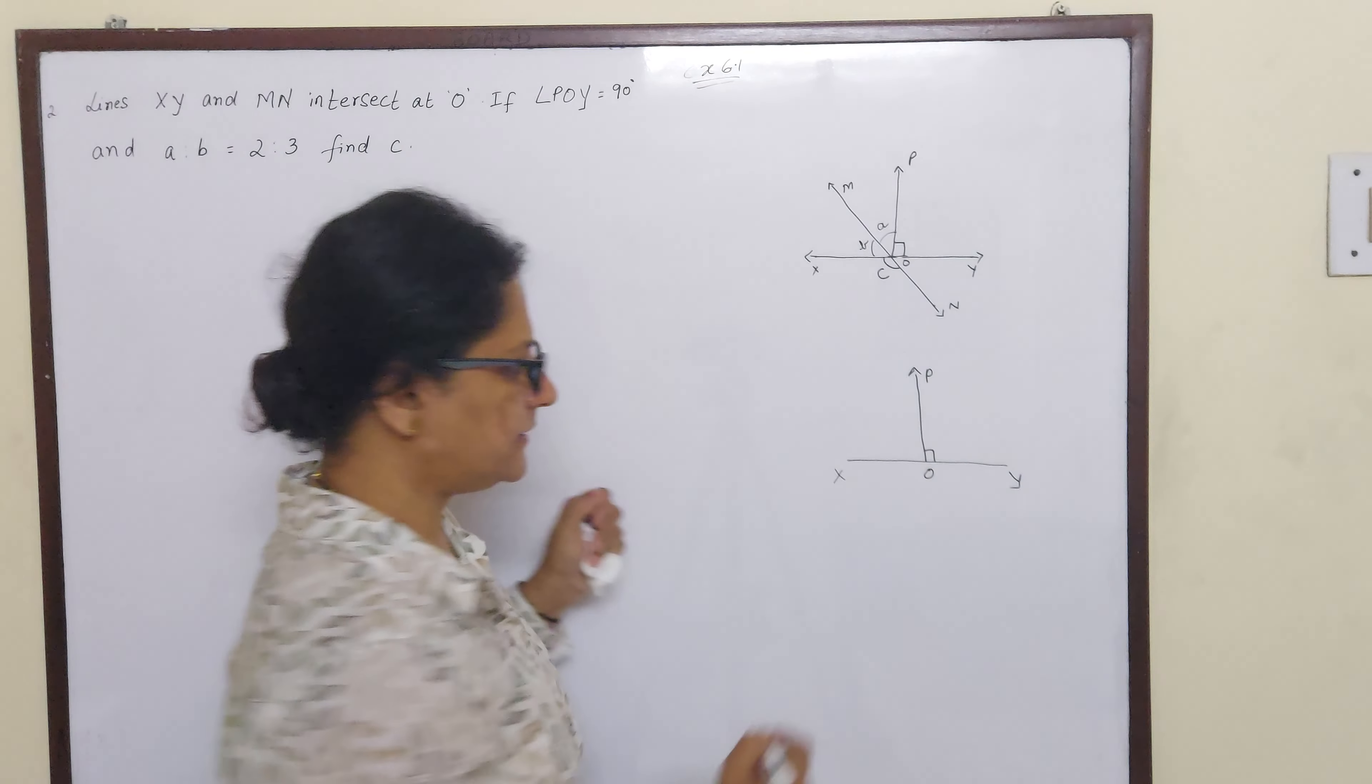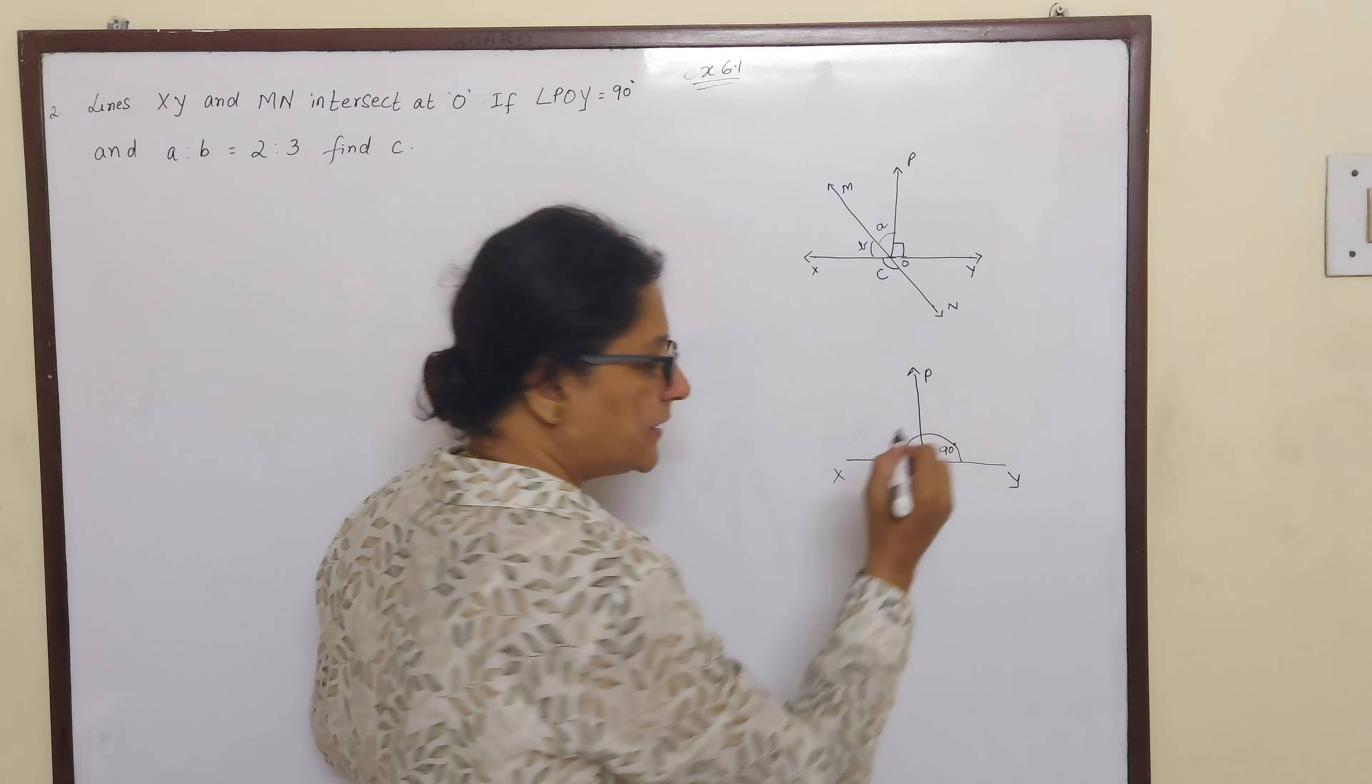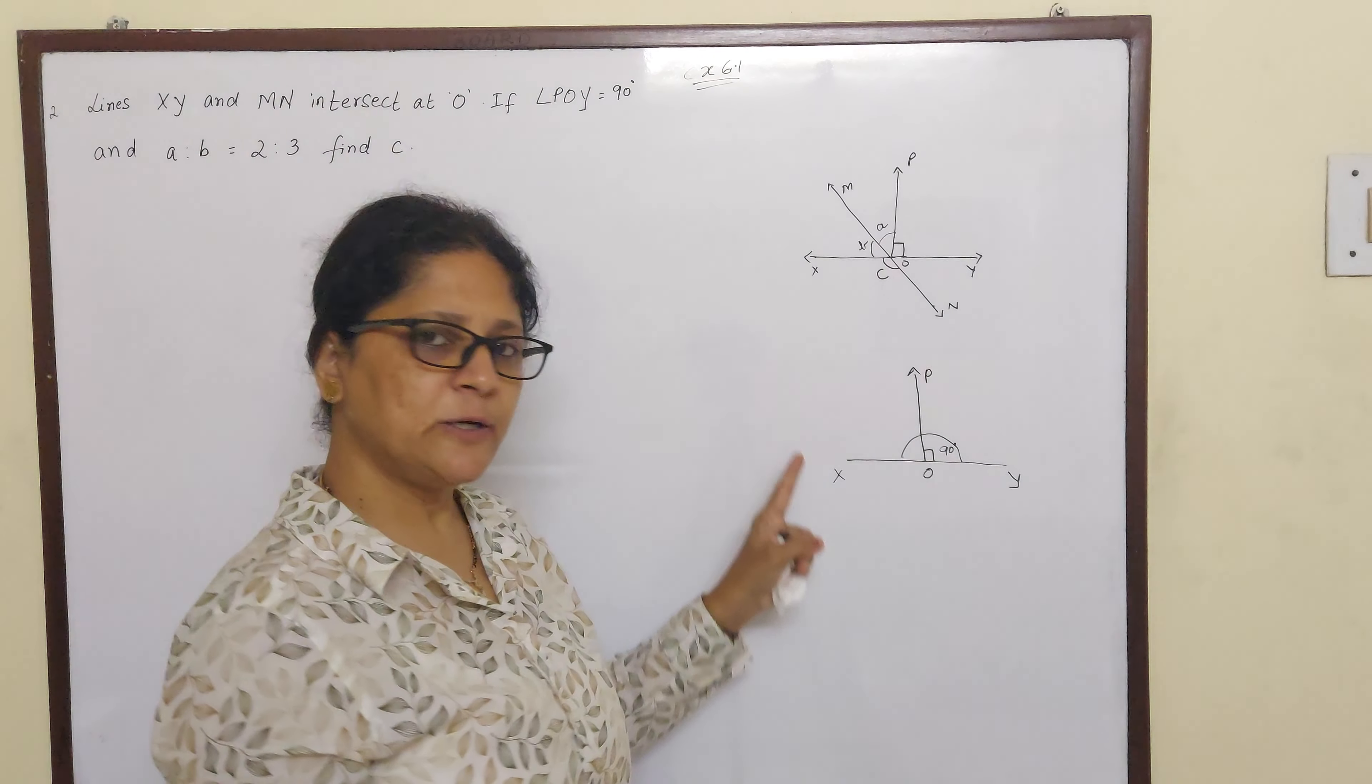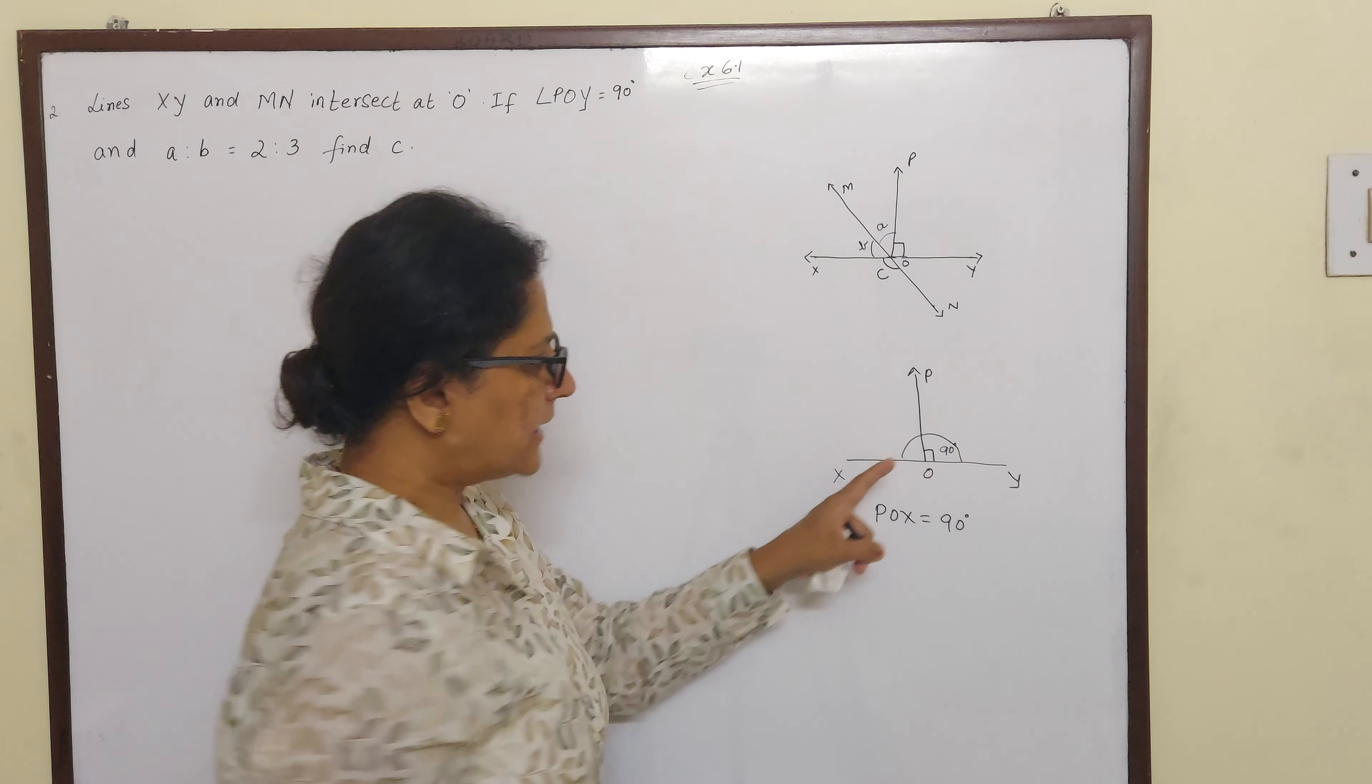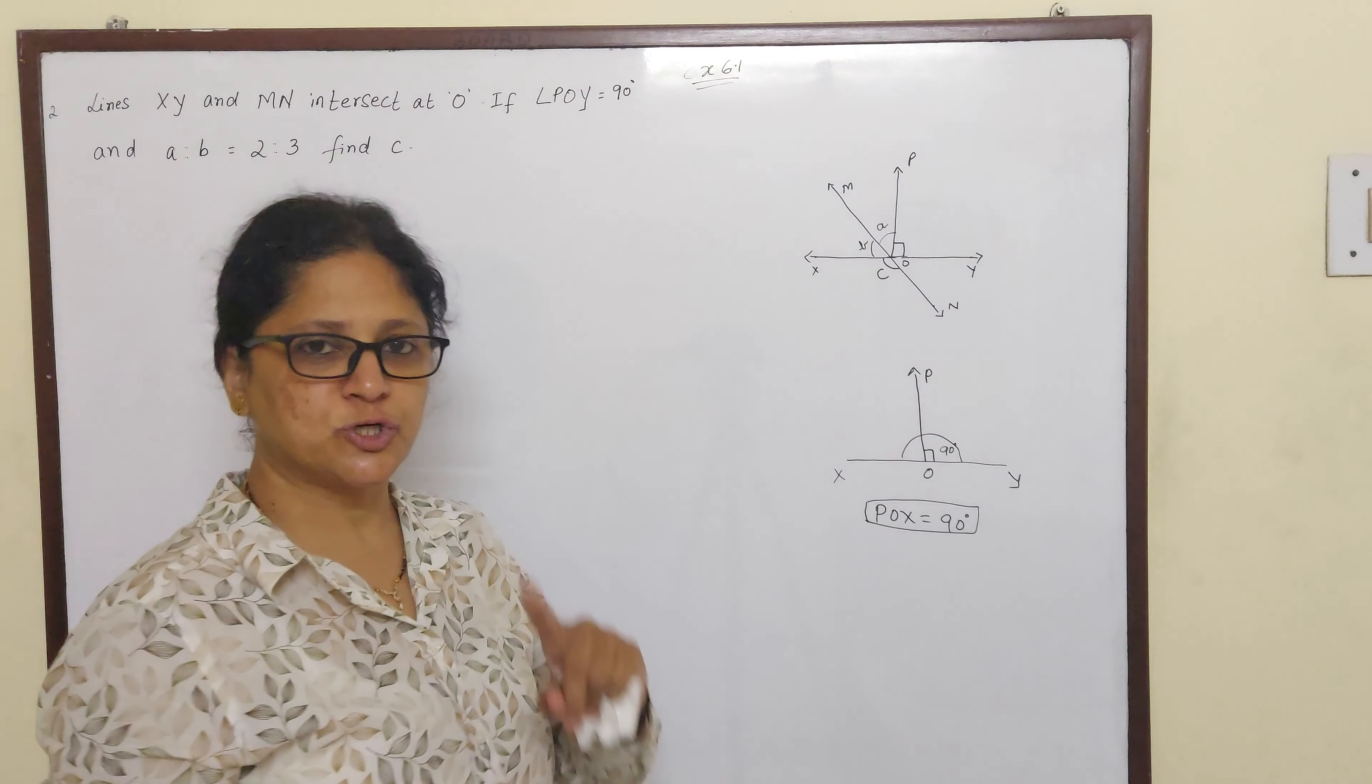That this is 90 degrees. And in exercise 6.1, first sum we have learnt that if there is a straight line then they make 180 degrees. That means if POY is 90 degrees then POX is also 90 degrees because 90 plus 90 will give you 180 degrees. So POX is equal to 90 degrees, you should know that.